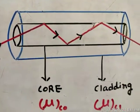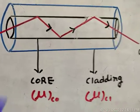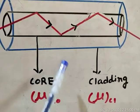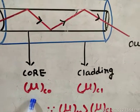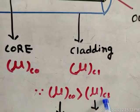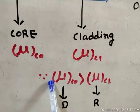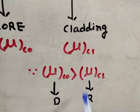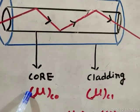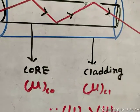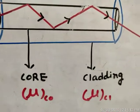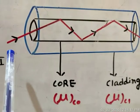The optical fiber tube has two parts: the inner cylinder is known as the core and the outer cylinder is known as the cladding. The refractive index of the core is much more than the refractive index of the cladding. That is why the core region is treated as the denser medium and the cladding region is treated as the rarer medium. The inner cylinder (core) behaves as a denser medium and the outer cylinder (cladding) behaves as a rarer medium.